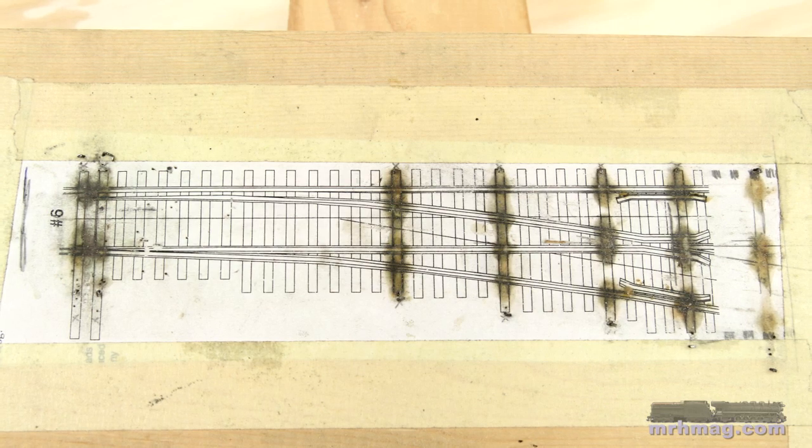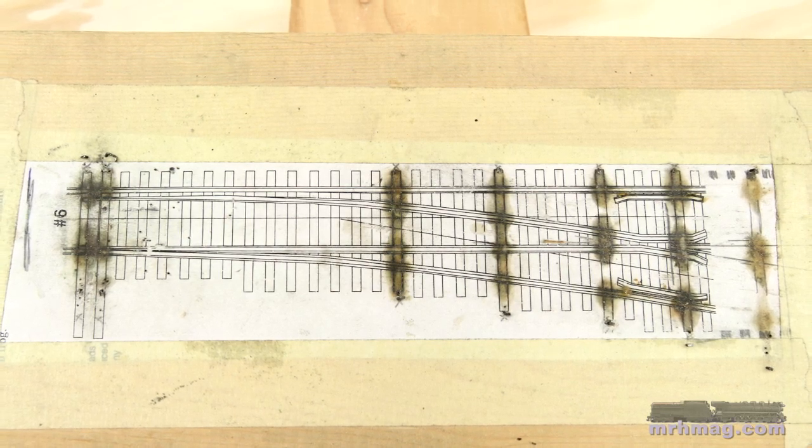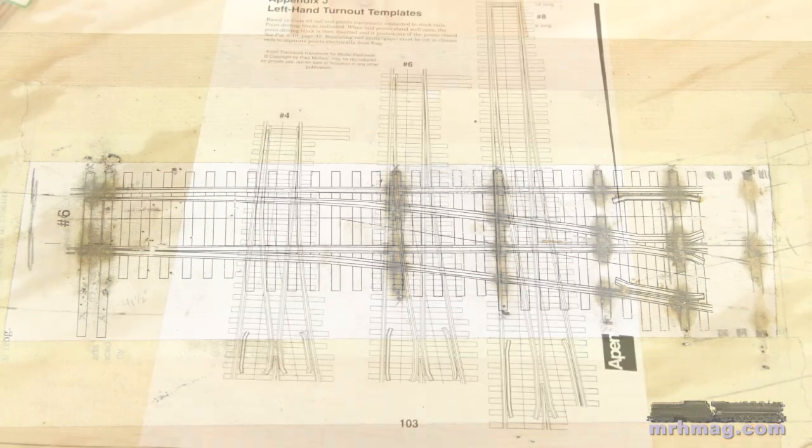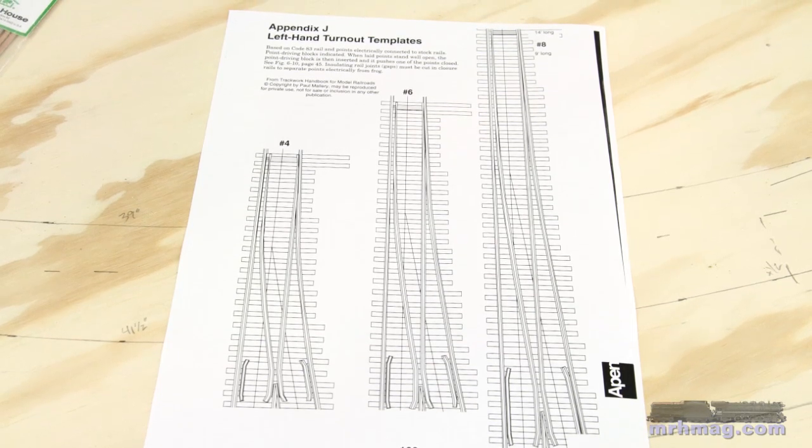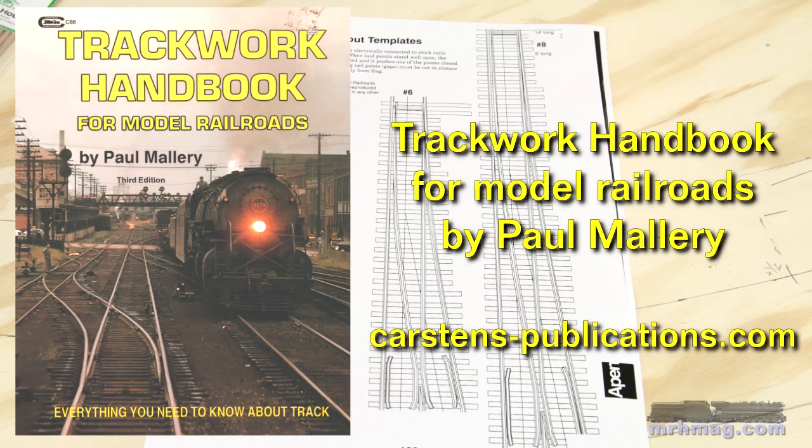I use a simple jig to place the ties and rails. It's just a paper template taped to a 1x6 piece of pine. I photocopied my paper templates from Paul Mallory's Trackwork Handbook for Model Railroads, but any accurate turnout diagram will work.